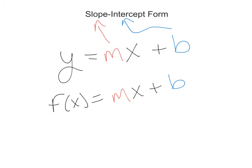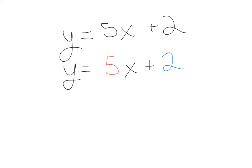So if we're looking at a linear equation, let's say y equals 5x plus 2. That means that 5 is the slope, and 2 is the y-intercept.